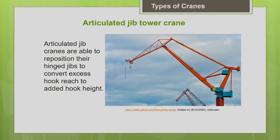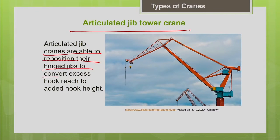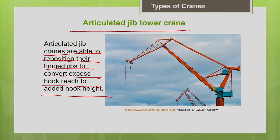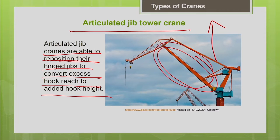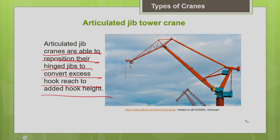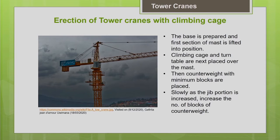There is also the articulated jib tower crane, which has a hinged jib that can be repositioned to convert excess horizontal hook reach into added hook height. So when you do not need excess horizontal reach, it can be converted into vertical height as needed. However, articulated jib cranes are very costly.